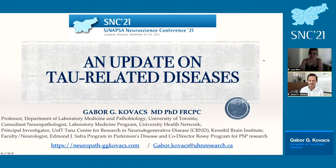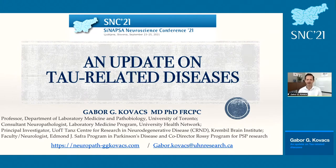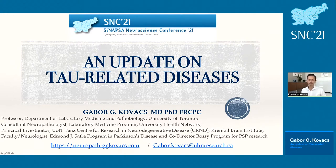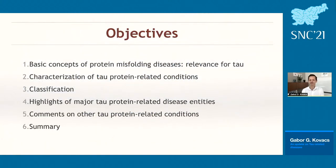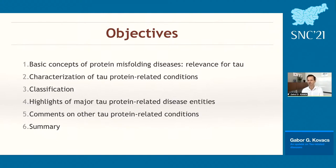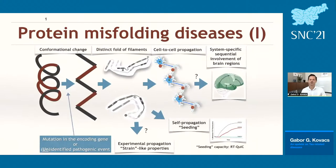Dear Lana, dear ladies and gentlemen. In the next 20–25 minutes I will summarize our current knowledge on tau-related diseases, especially how a neuropathologist and researchers currently approach the classification and characterization of these conditions. The objectives are: to position tau within the group of protein misfolding diseases; to characterize tau protein-related conditions; to offer a novel approach to classification; and to highlight the major tau protein-related conditions.